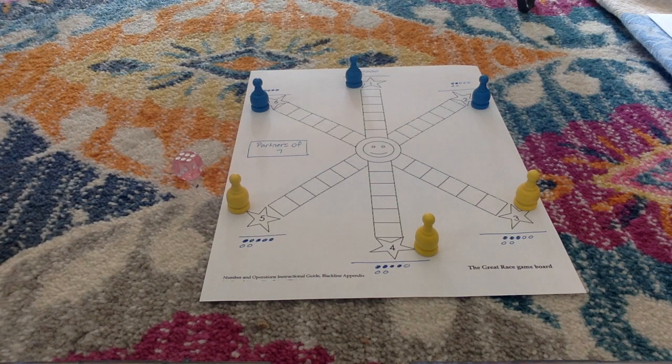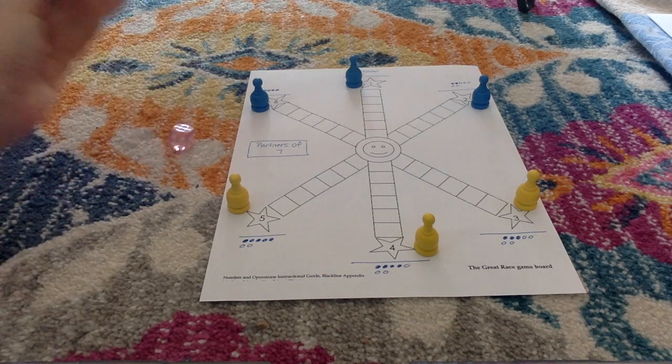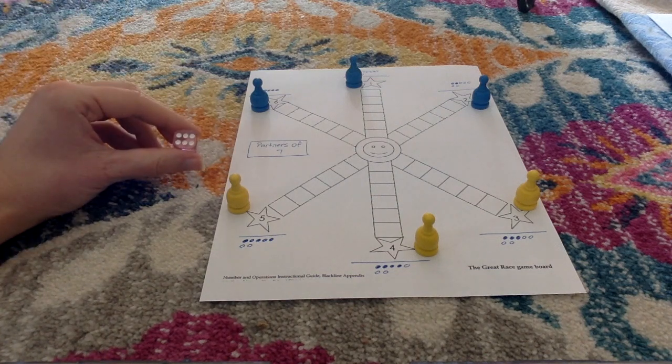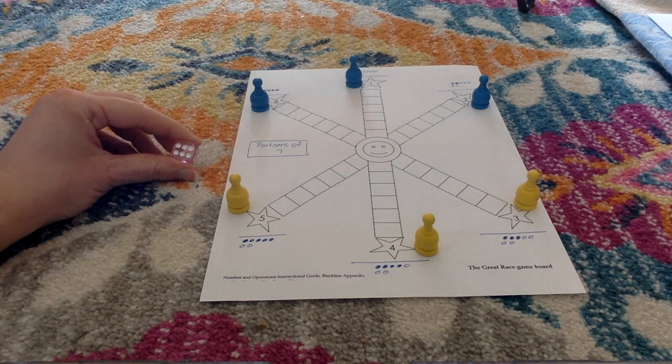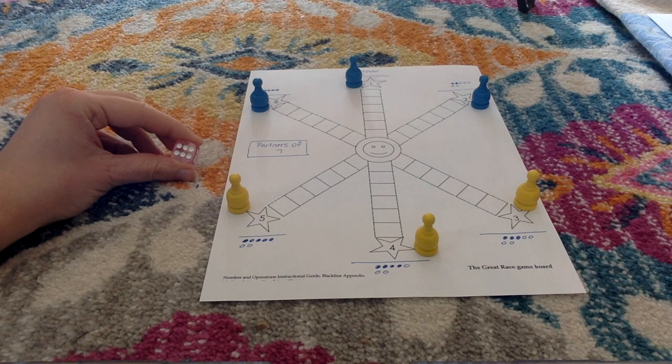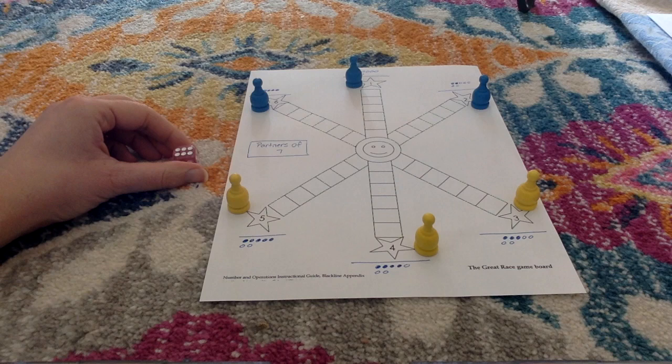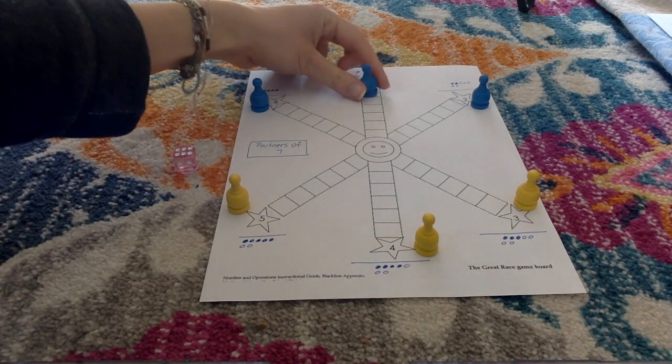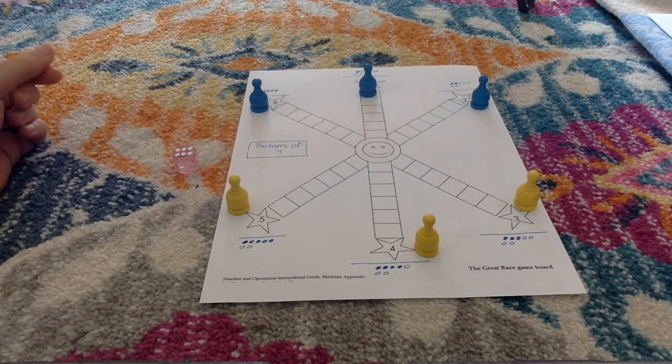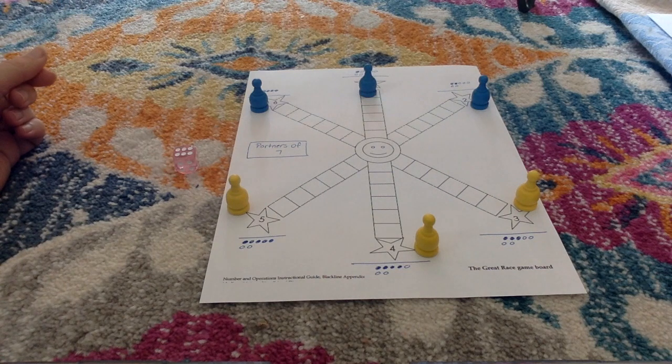The first player rolls the dice. A six has been rolled. Both players look at the board and decide what plus six equals seven. That would be a one. The player who's on the one gets to move one space, trying to get closer and closer to the smiley face.